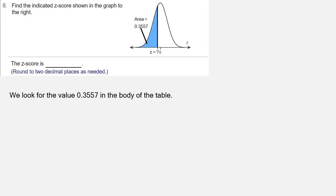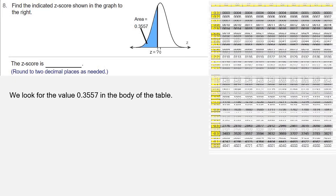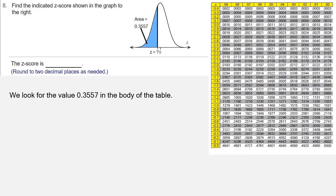We're going to look for that value in the body of the table. We're going to use the negative side of the standard normal distribution table because 0.3557 is less than 0.5.